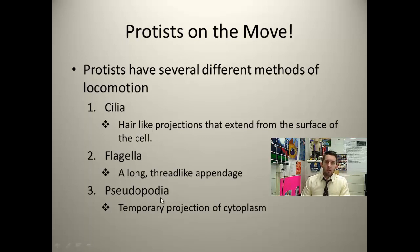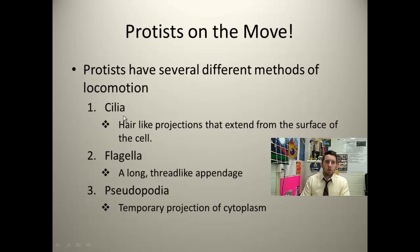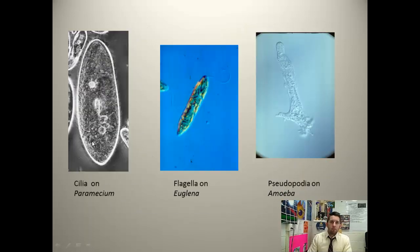And pseudopods — pseudopodia. Pseudo meaning fake or false, pod referring to feet — false feet. They have a projection; they kind of shoot ahead and then pull the rest along behind it. So depending on whether they have these different methods of locomotion, they might be classified differently. Here's some examples: you can see the hair-like cilia, the flagellum on this euglena, and a pseudopod being a projection shot outward in the direction of movement.